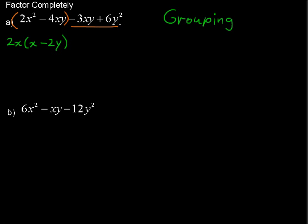Looking at the next group, a 3 and a y are common to each term. It's usually a good idea to factor out the negative coefficient if there is one, so we'll factor out negative 3y. Negative 3y times x gives negative 3xy, and negative 3y times negative 2y gives positive 6y squared.